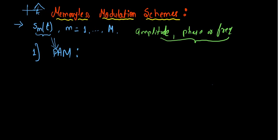Why it is called a memoryless modulation scheme — we are not going into that now; you will get it in subsequent lectures. So let's start with the first: amplitude. When we transmit information based on amplitude changes, that is why it is termed PAM — Pulse Amplitude Modulation. We will do digital PAM.